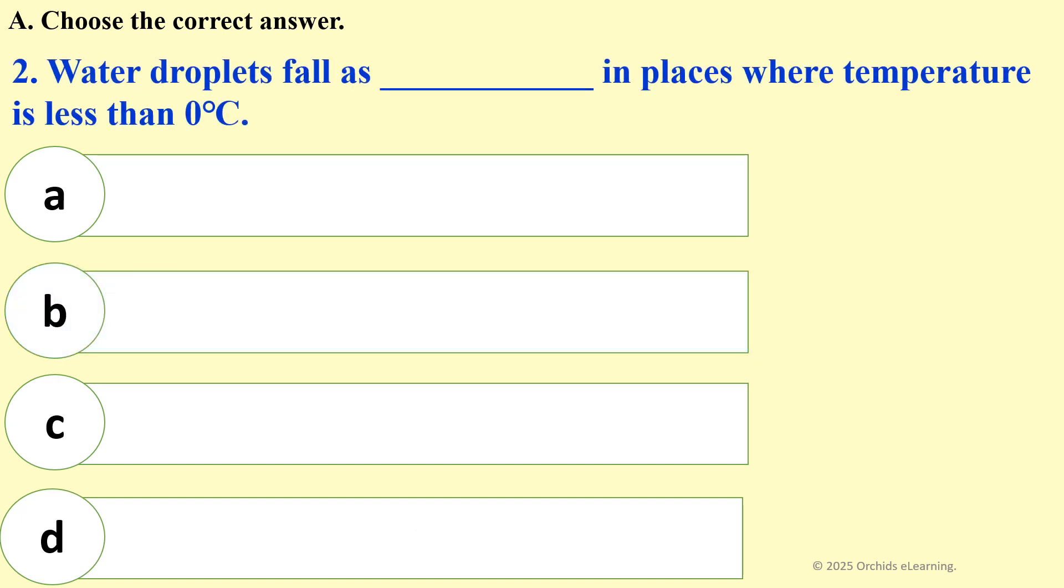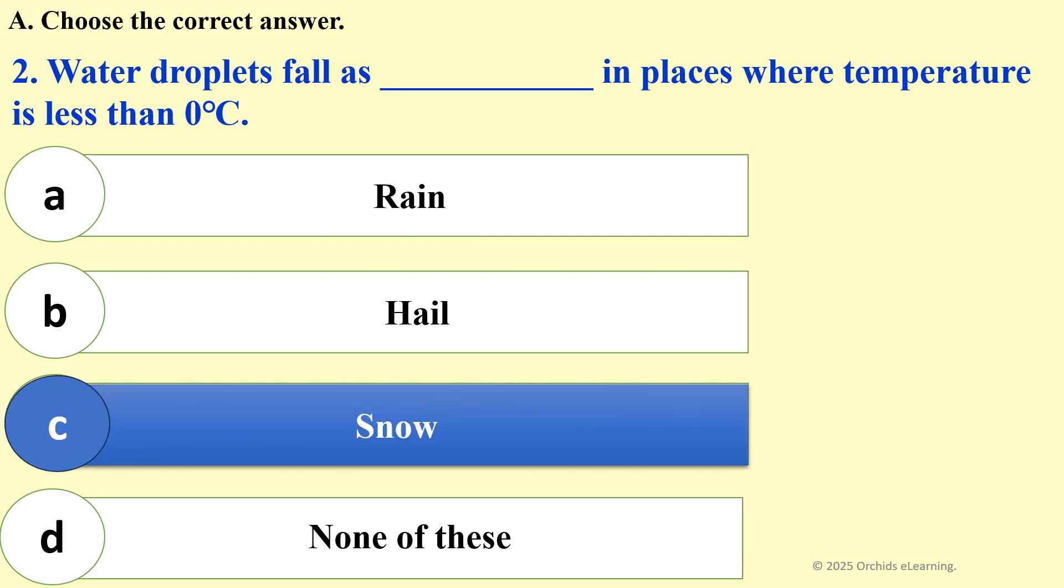Water droplets fall as snow in places where temperature is less than 0°C.